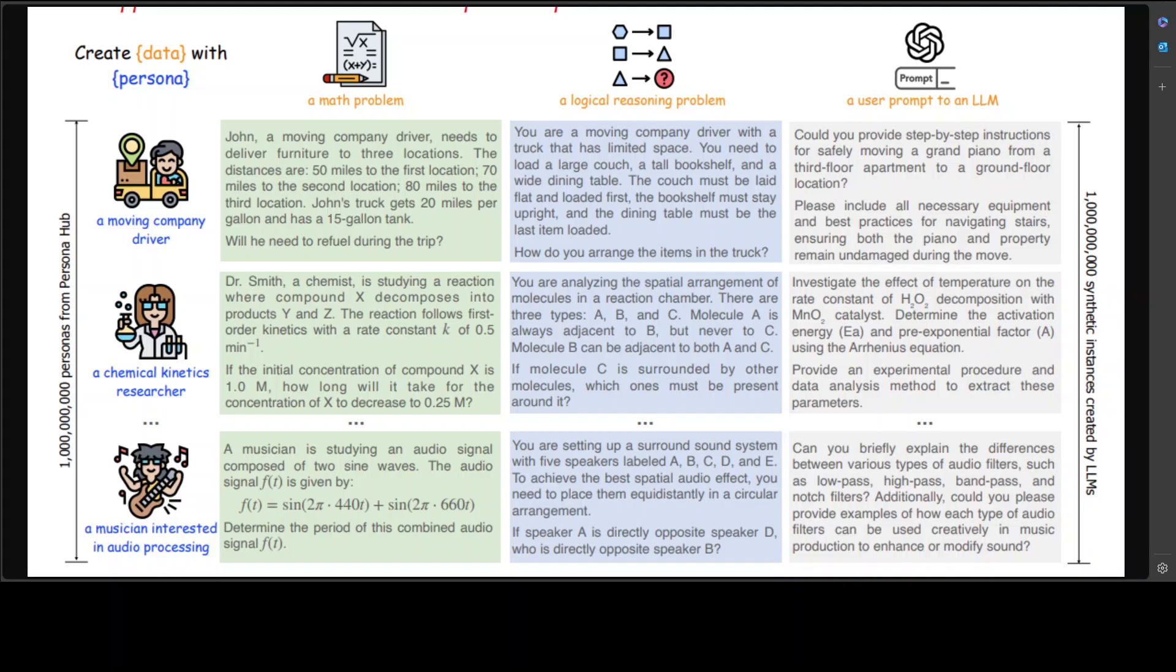They also propose this new persona-driven data synthesis methodology and present PersonaHub, which is a collection of 1 billion diverse personas automatically created from web data. They have shown that this methodology can facilitate the scaling of synthetic data creation across various scenarios, demonstrating its potential to revolutionize creation and applications of synthetic data and its prospects as a general data synthesis engine for both research and practice.